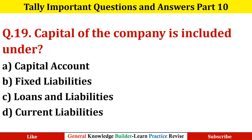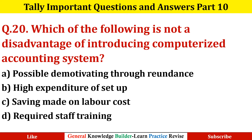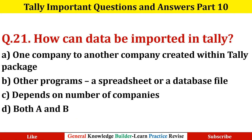Question number nineteen: Capital of the company is included under? Option B: Fixed Liabilities. Question number twenty: Which of the following is not a disadvantage of introducing a computerized accounting system? Option C: Saving made on labour cost. Question number twenty-one: How can data be imported in Tally? Option D: Both A and B.